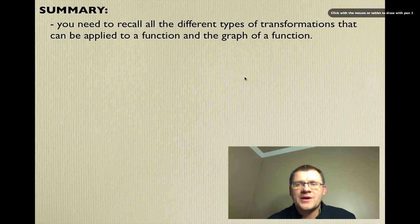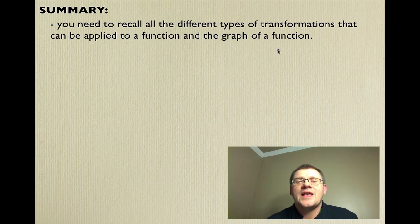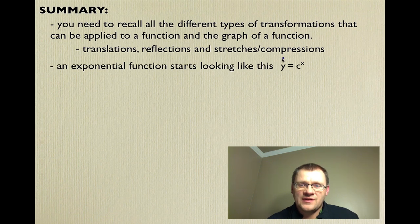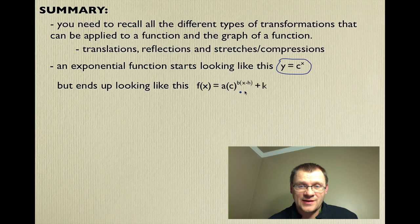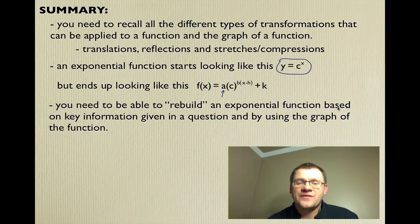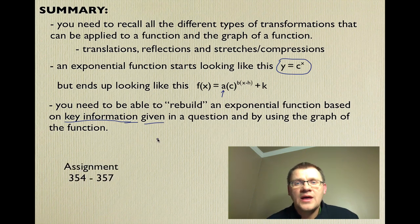In summary, recall all the different types of transformations that can be applied to a function: horizontal and vertical shifts, horizontal and vertical stretches, and reflections in the x and y axes. An exponential function starts as y = c^x and transforms into y = a · c^(b(x-h)) + k, where a is the vertical stretch, b is the horizontal stretch, h is horizontal shift, and k is vertical shift. Negative a gives a reflection in the x-axis; negative b gives a reflection in the y-axis. Your assignment is on pages 354 to 357.